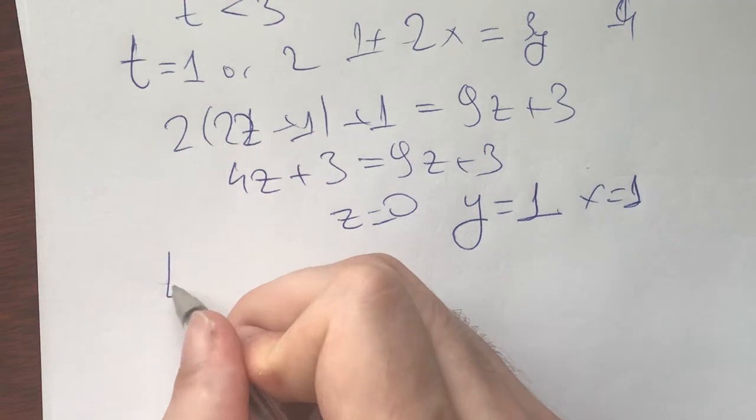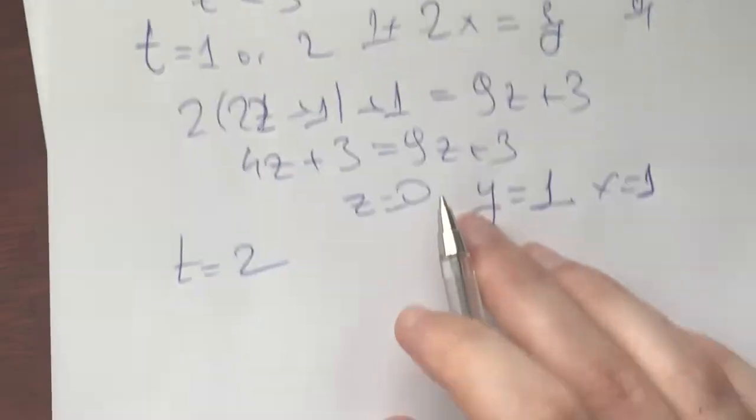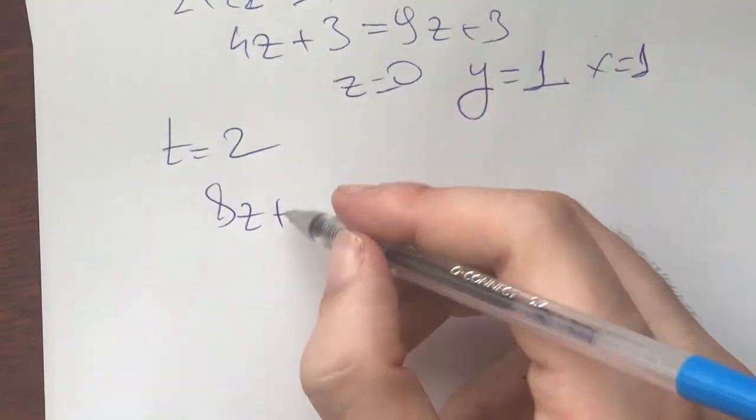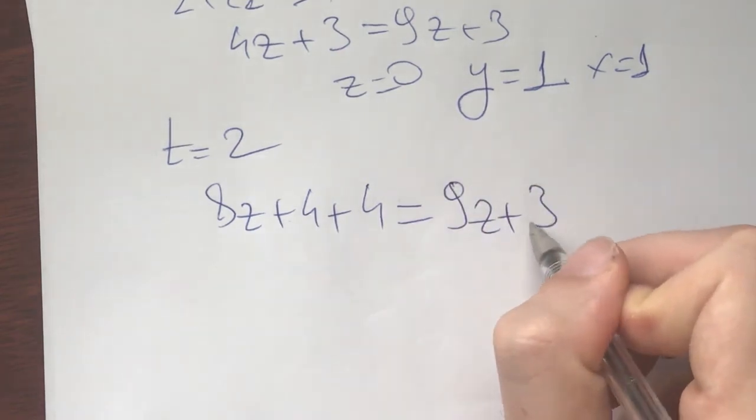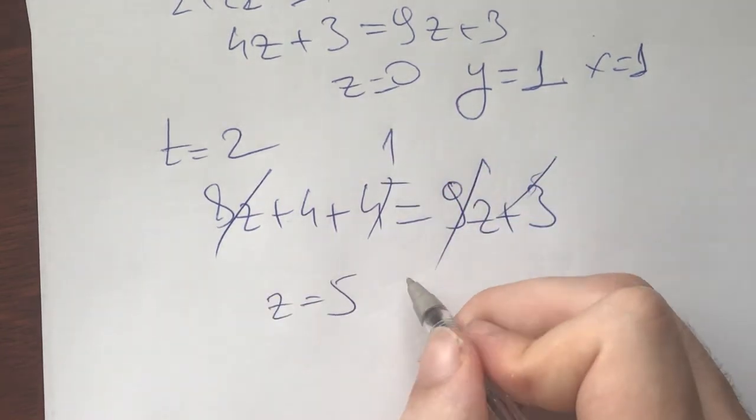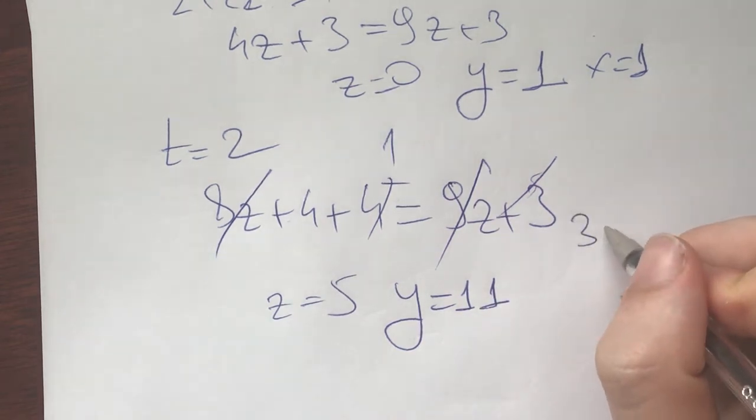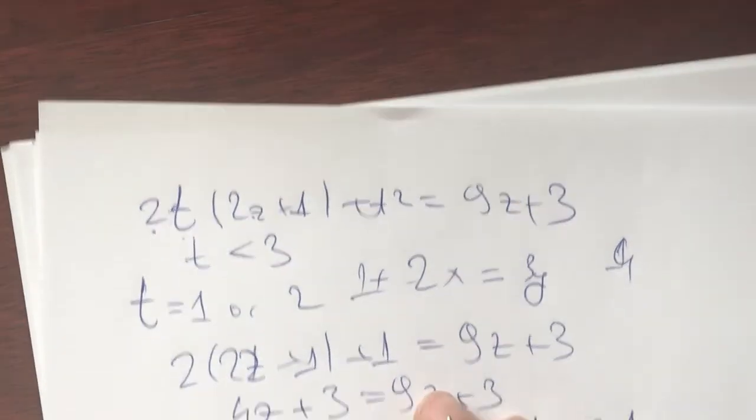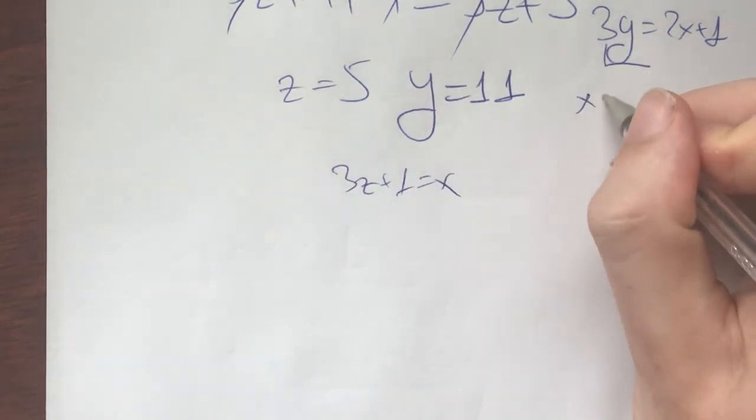And the other thing is if t equals 2, then what do we have? We have that 8z plus 2t, 2t is going to be 4 plus t² plus 4 equals 9z+3. And now z equals 5. This implies that y equals 11. And now from 3y = 2x+1, we get 3z+1 = x. So x equals 16.